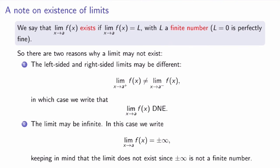Let me end this video with a brief comment on existence of limits. We say a limit exists if it equals L, but importantly, L must be a finite number — L = 0 is perfectly fine. There are two reasons a limit may not exist: first, if the left-sided and right-sided limits are different, we write that the limit does not exist (DNE); second, when the limit is infinite. In that case we write the limit equals plus or minus infinity, but you must keep in mind that infinity is not a finite number, so the limit still does not exist. So if asked whether a limit exists at a point, the answer is yes only if the limit is a finite number.